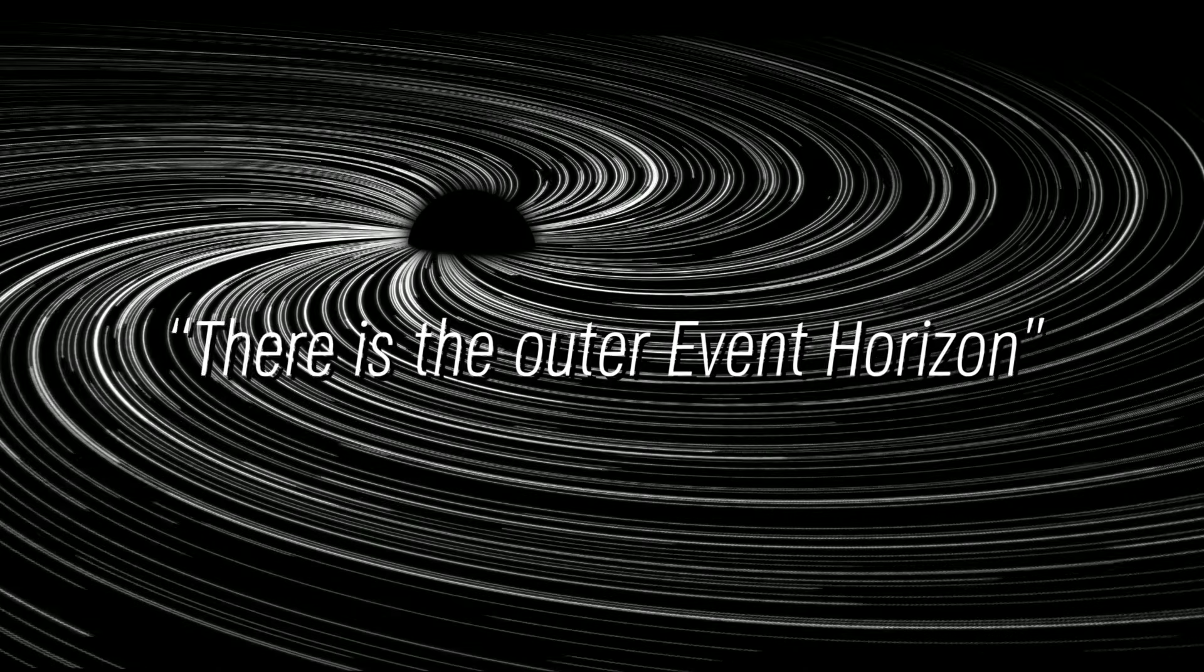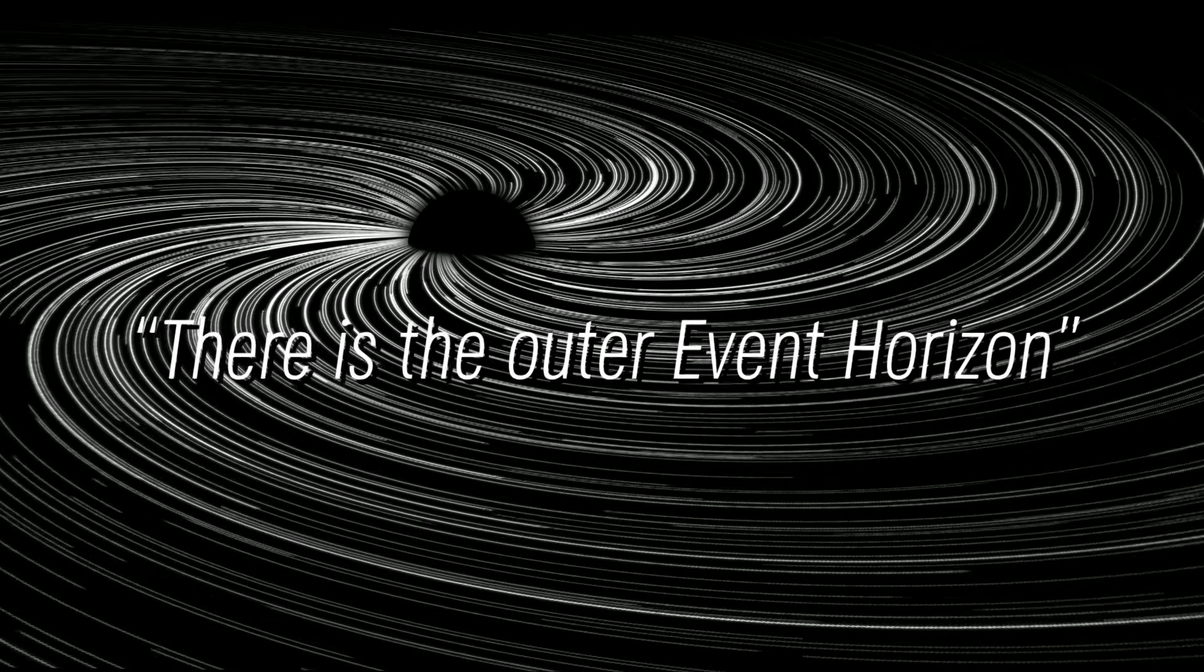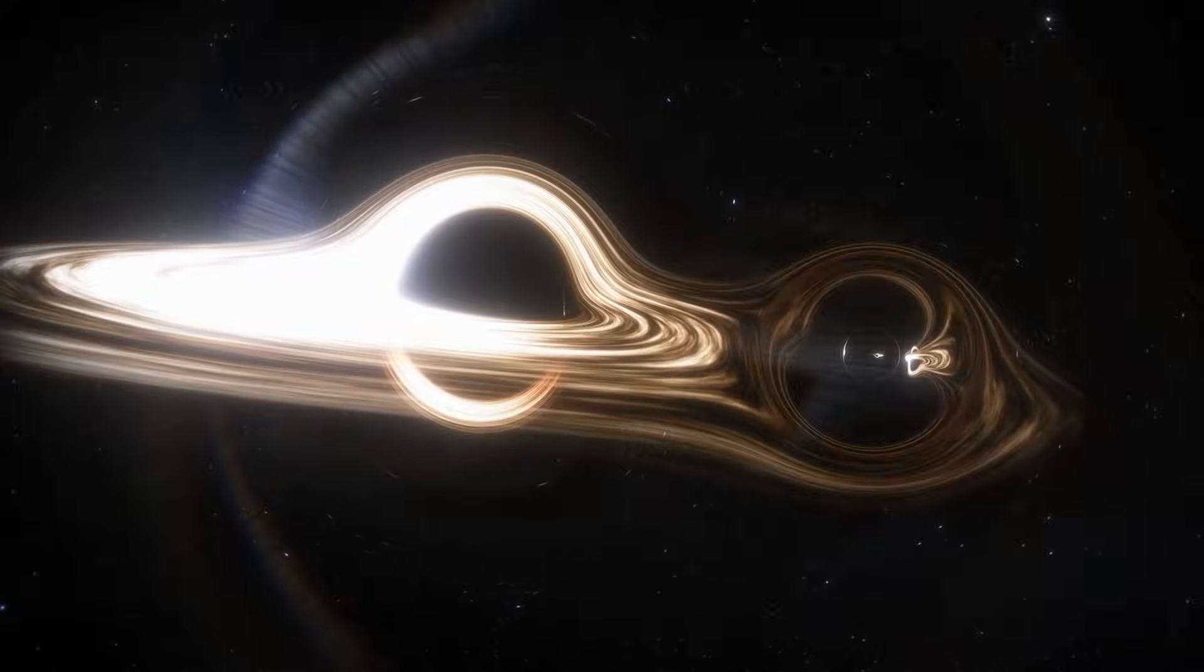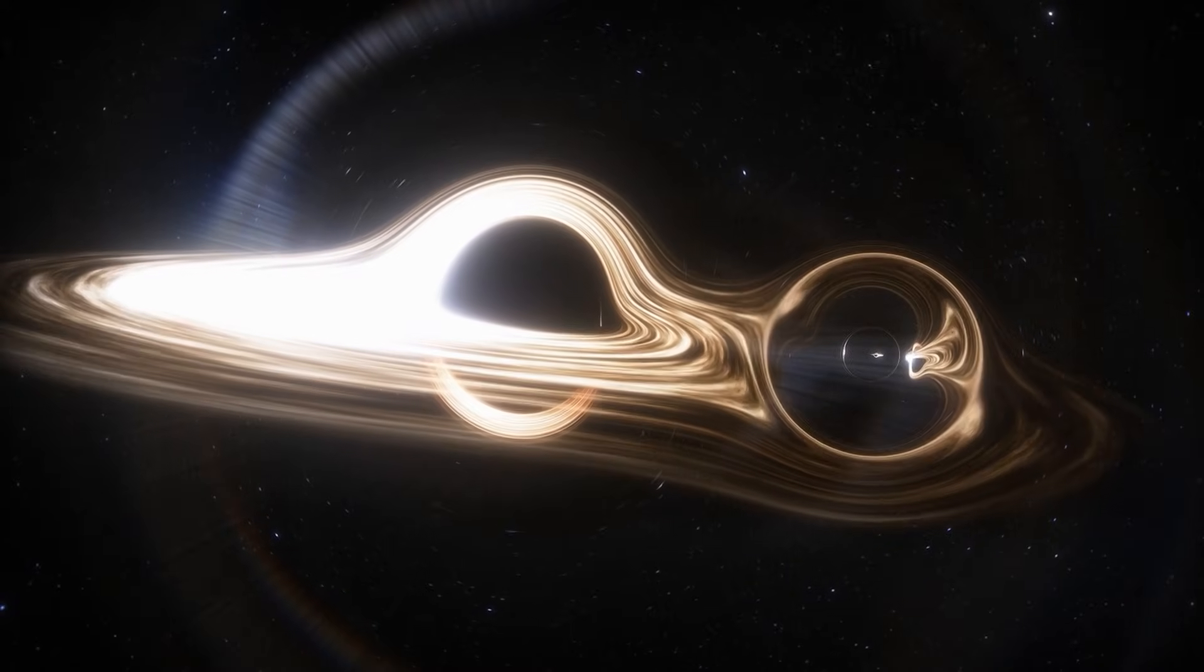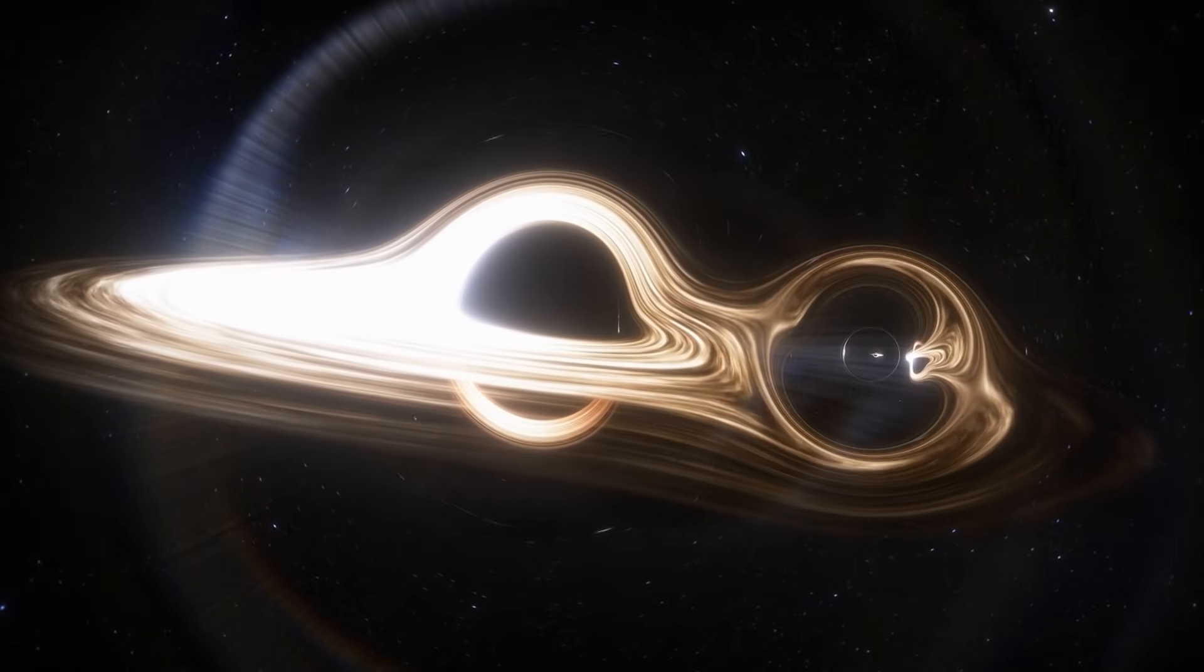First, there is the outer event horizon, a boundary that surrounds the mouth of every black hole. Once something reaches this point of the black hole, it cannot escape and is either trapped there or is pulled deeper on its journey to the singularity.